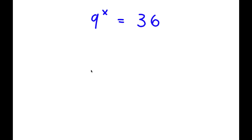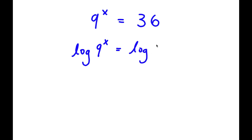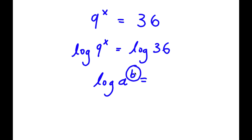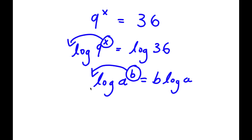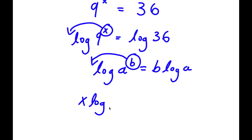So 5 to the power of 10 is my answer. Now in this next problem, I have 9 to the power of x is equal to 36. To solve this, the first thing I'm going to do is take the log on both sides. So now I have log 9 to the power of x is equal to log 36. If I have something in the form log a to the power of b, I can move b to the front, so this equals b times log a. So I can move x to the front: x times log 9 is equal to log 36.